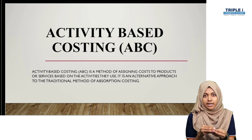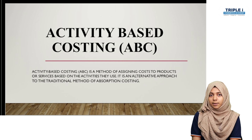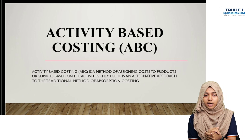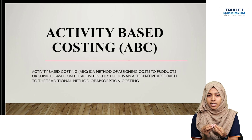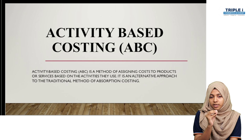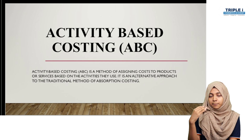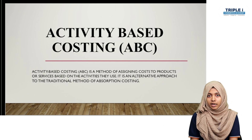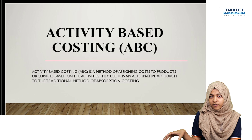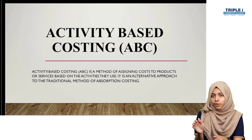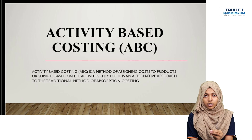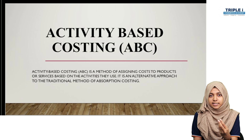In absorption costing, overhead is divided by the number of units produced. So if product A has 5 supervisions and product B has 2, the cost is split simply by units rather than by actual activity usage. ABC has a plus point over absorption costing because it more accurately classifies and shares the use of costs.